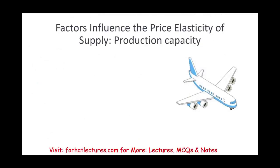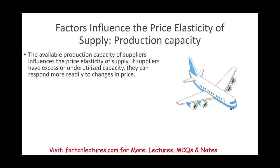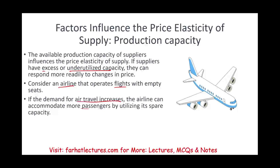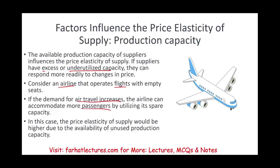Production capacity is another factor. If suppliers have excess or underutilized capacity, they can respond more quickly to price changes. Consider an airline operating flights with empty seats — if demand for air travel increases, the airline can accommodate more passengers using its spare capacity, resulting in higher price elasticity of supply. But if all seats are taken and demand increases, the airline cannot expand further and can only raise prices to offset the shortage.